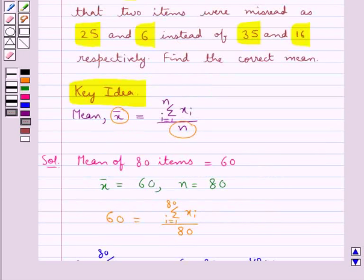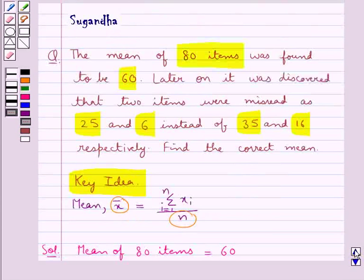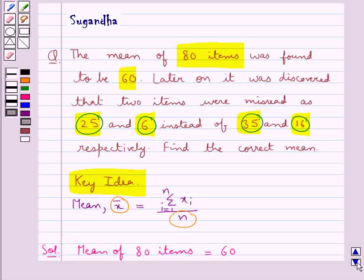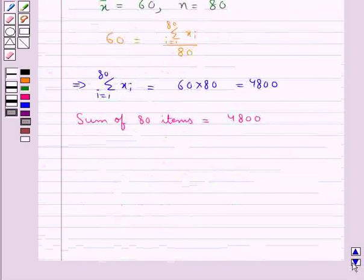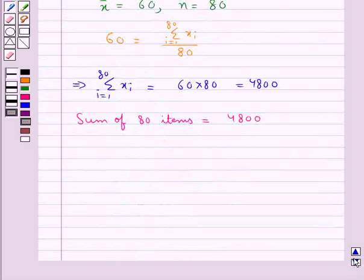But as given in the question, two items were misread as 25 and 6. Instead of 35, the person read 25, and instead of 16, the person read 6. So there would be some correction in the sum of 80 items.